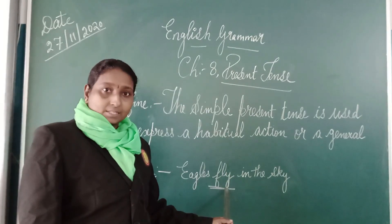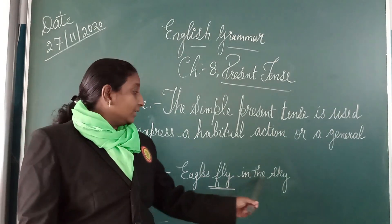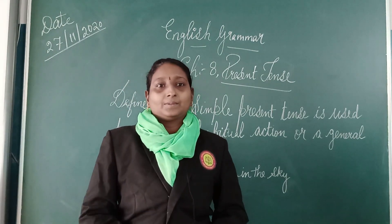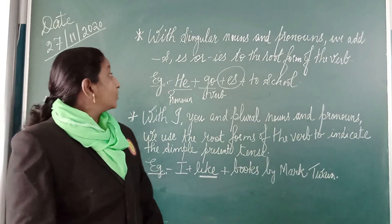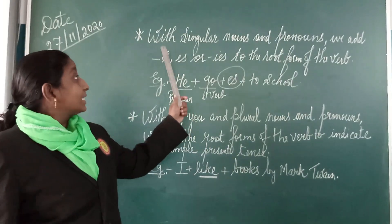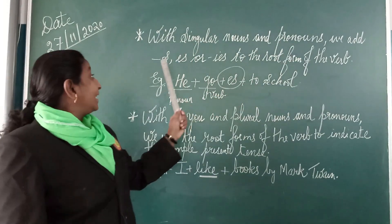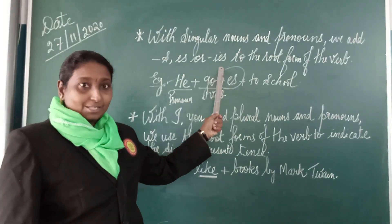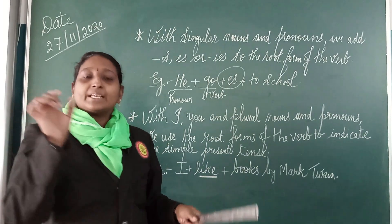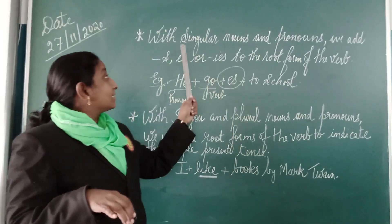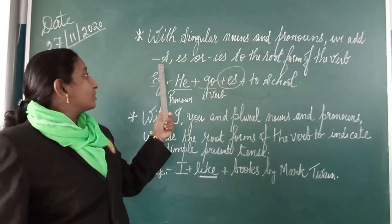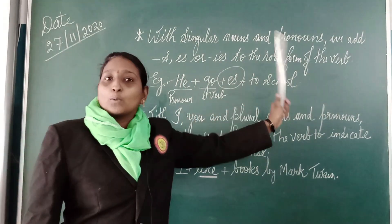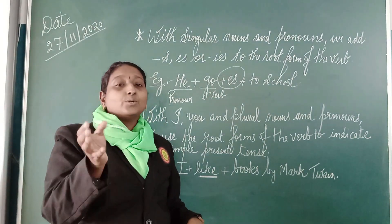Eagles fly — fly is an actual action in the sky. So this is known as a simple present tense. With singular nouns and pronouns, we add S, E-S, or I-E-S to the root form of the verb. When there is a sentence where there is a singular noun or a pronoun, we always use S, E-S, or I-E-S to the root form of the verb.